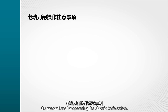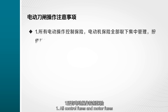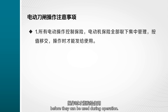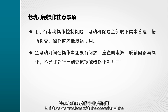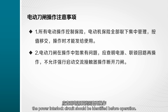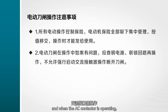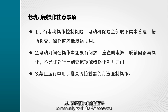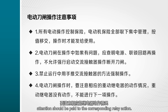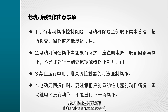Precautions for operating the electric knife switch: First, all control fuses and motor fuses for electric operation should be removed, centrally managed, and handed over according to their values before use during operation. Second, if there are problems with the electric knife switch operation, the power analog circuit should be identified before proceeding — forceful starting is not allowed when the AC contactor is operating. Third, it is prohibited to manually push the AC contactor during operation to force running. Fourth, when operating the electric knife switch, attention should be paid to the corresponding relay action; if the relay is not activated, the next operation cannot be carried out.